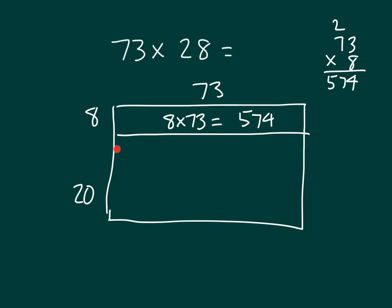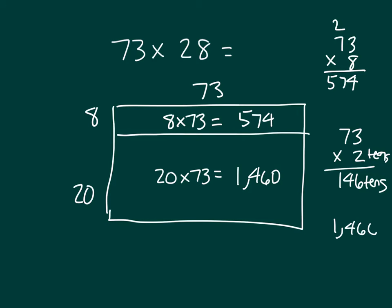The area here would be 20 times 73. And when we solve for that, that would be 73 times 2 tens. So that would be 146 tens, which also equals 1,460. So my next step would just be to add those two partial products to be able to get my answer, which is 2,034.